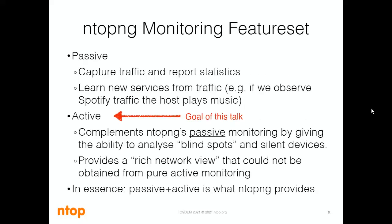ntopng's monitoring feature set is based on both active and passive monitoring. The passive one captures traffic and reports statistics. Thanks to passive monitoring, we can understand some services from the traffic — for example, we can understand if a host is playing music, just by checking its traffic, or more specifically from its Spotify or YouTube traffic. At the same time, the active monitoring set complements the passive monitoring by analyzing its blind spots. In this way, ntopng provides a rich network view that could not be obtained from just one of them.